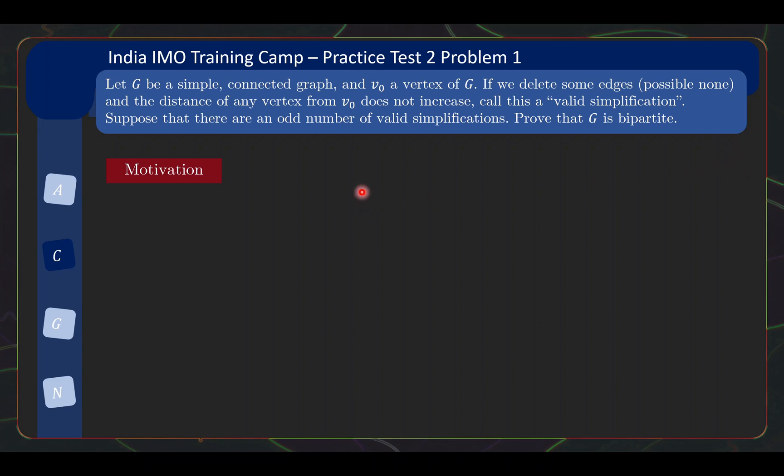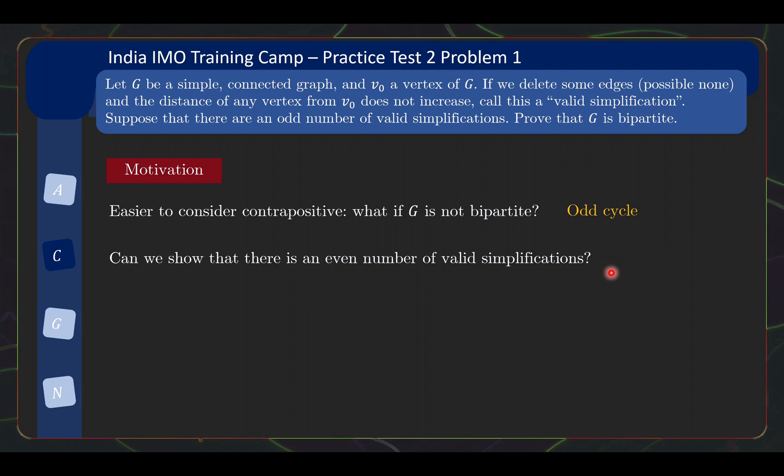So now I will go through some motivation before going through the solution. Actually, the solution to this problem is quite straightforward and it is quite easy to derive. The ideas are quite intuitive. So let us think about how we might approach this problem. One angle you might approach is this thing about bipartite seems to be quite useful, we know many facts about bipartite graphs. So what happens if G is not bipartite? It basically means that we have an odd cycle. Maybe we can do something with the odd cycle to prove our problem. Now since we are trying to prove the contrapositive, then what we really want is we want to show that there is an even number of valid simplifications.